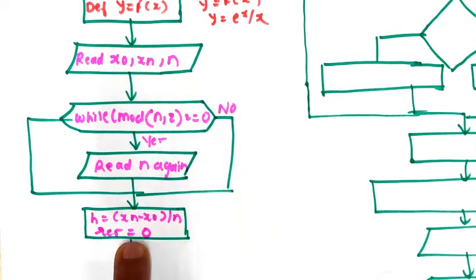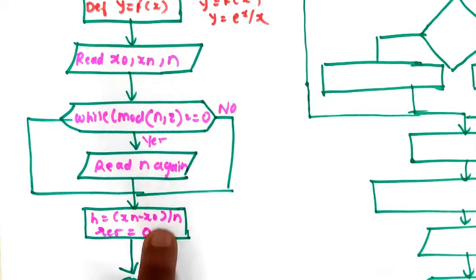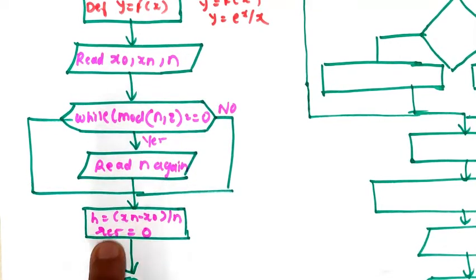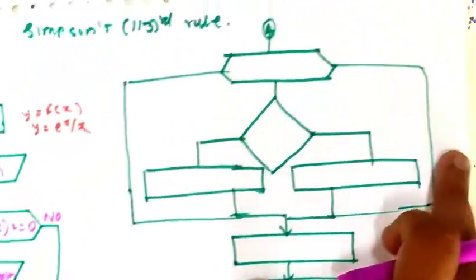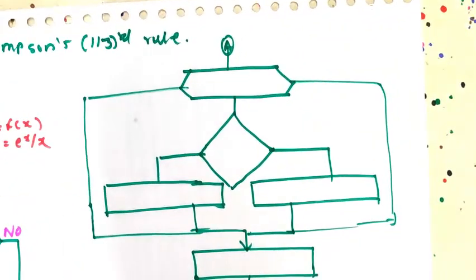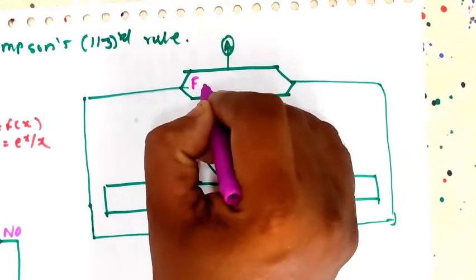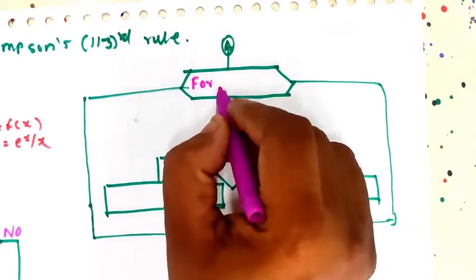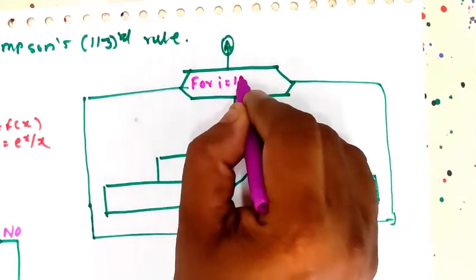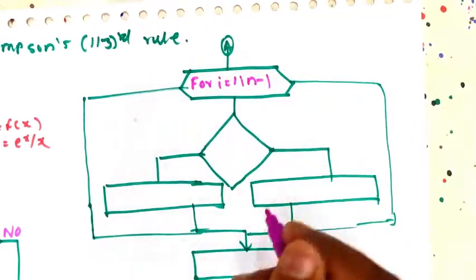So you calculate the step size using the formula xn minus x0 divided by n, and initially the result is set to 0. Next, to find the values of y from i equal to 1 to n minus 1, you use a for loop: for i equal to 1 to n minus 1.